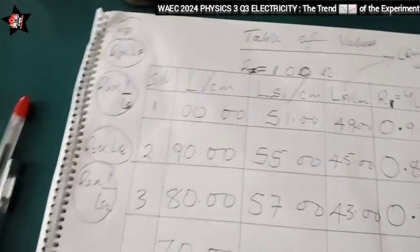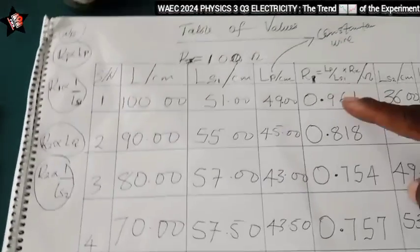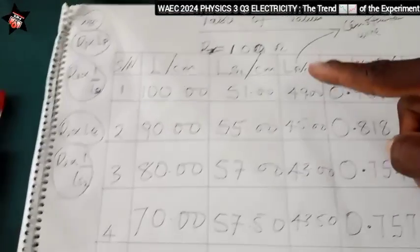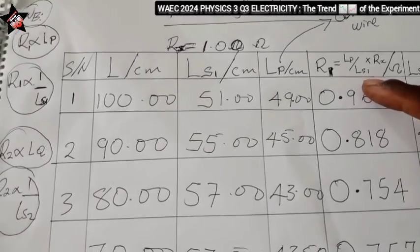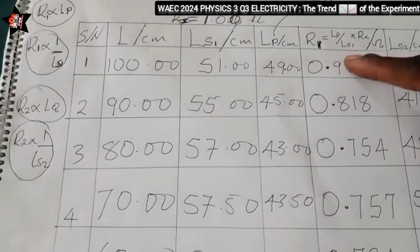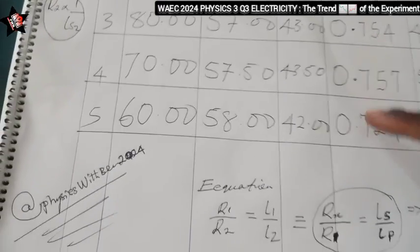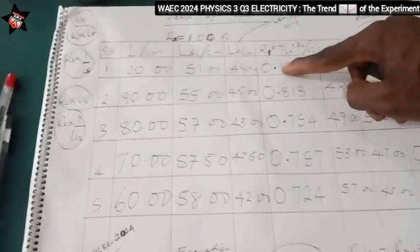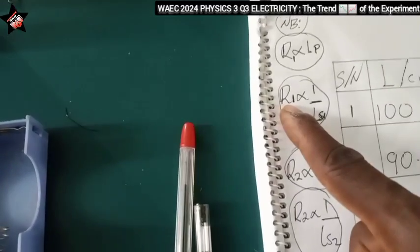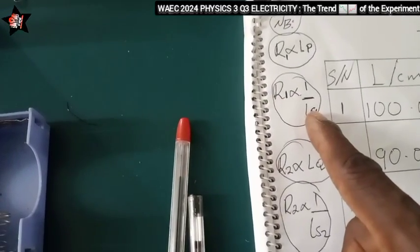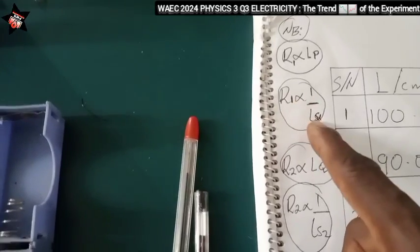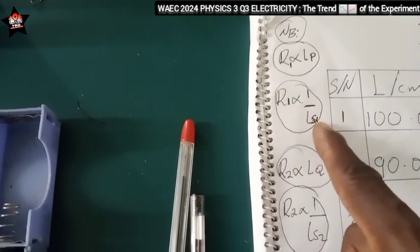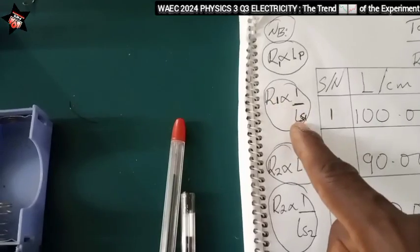And if you observe this table, Lp and R1 they had a relationship. Lp is decreasing down and R1 is also decreasing down. So this is perfect good.